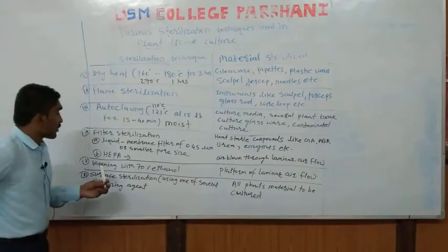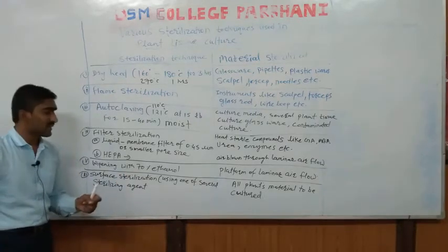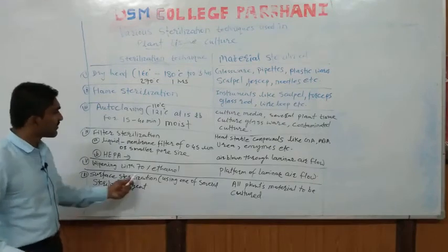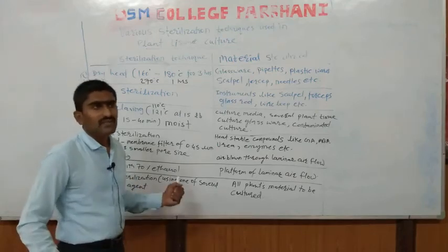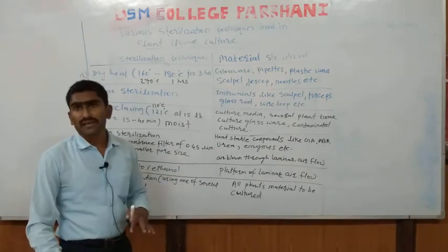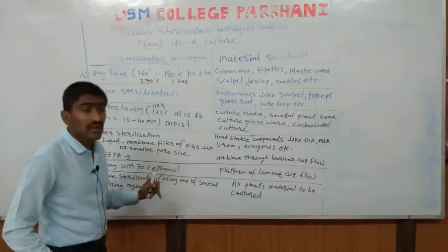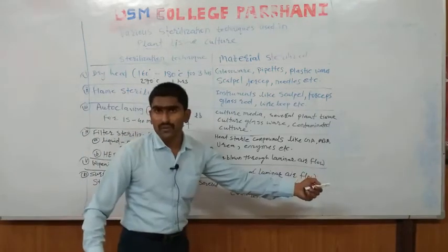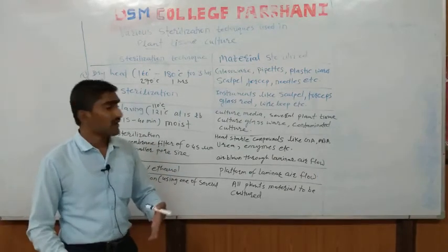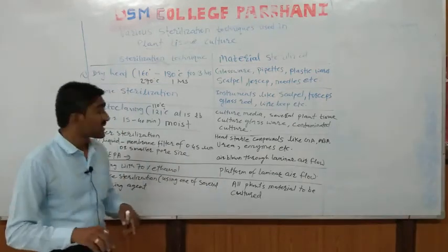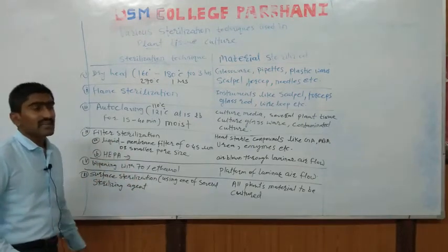Another technique is wiping with 70% ethanol. Ethanol has the ability to kill microorganisms, and 70% ethanol is sufficient to kill any microorganism. We can sterilize the platform of the laminar air flow — the surface where we actually work — by wiping it with 70% ethanol. Ethanol is also an effective sterilization agent.